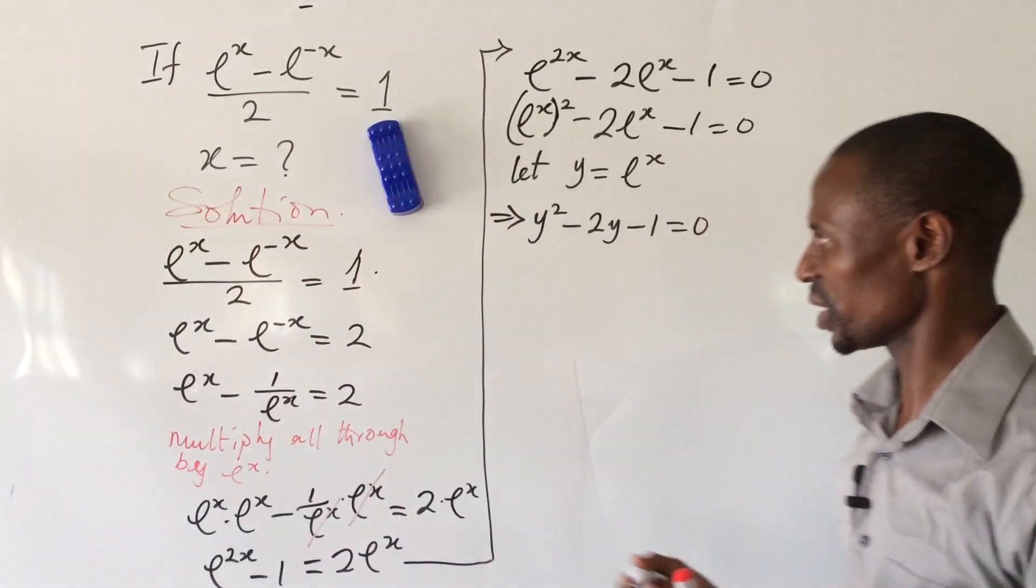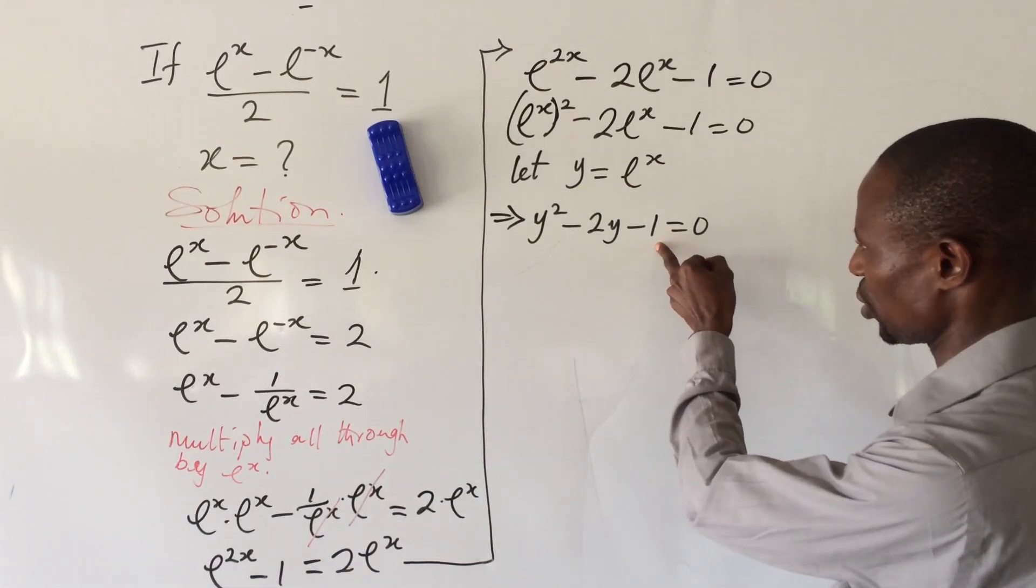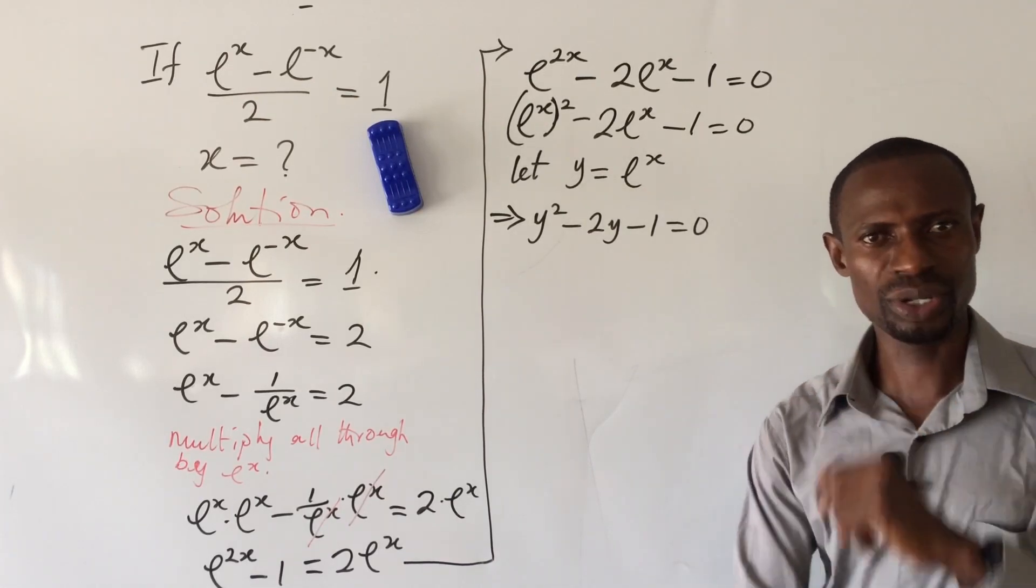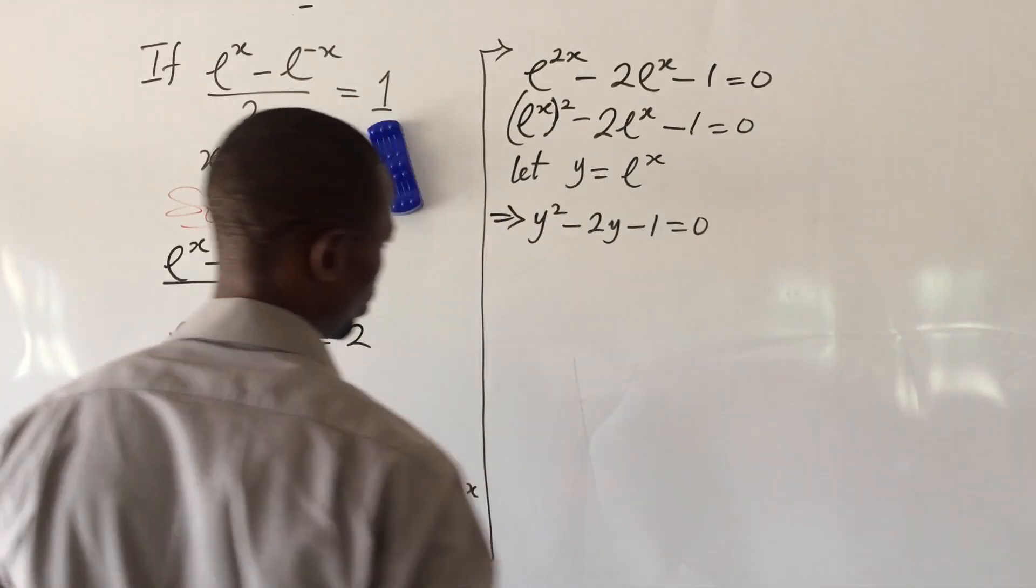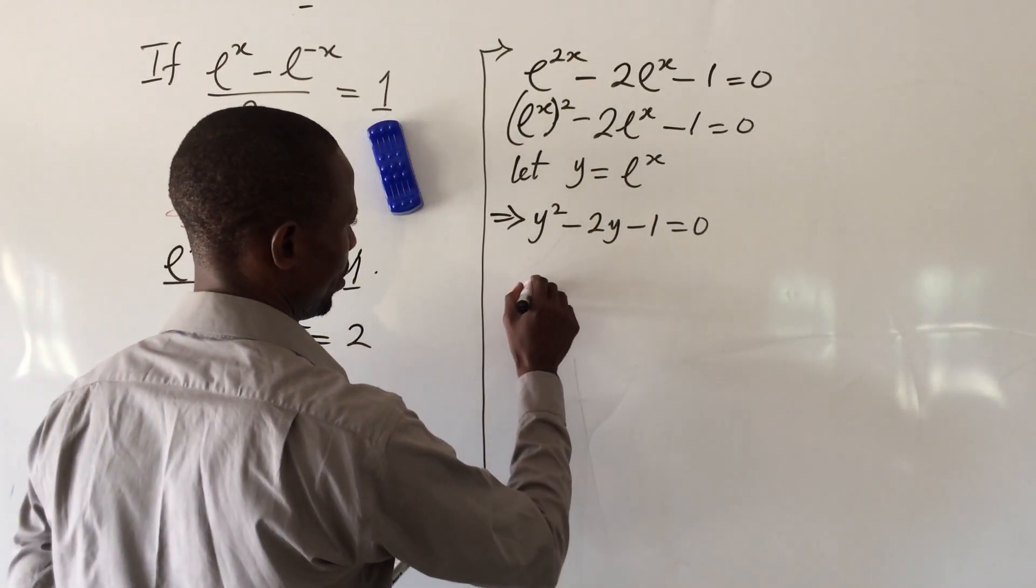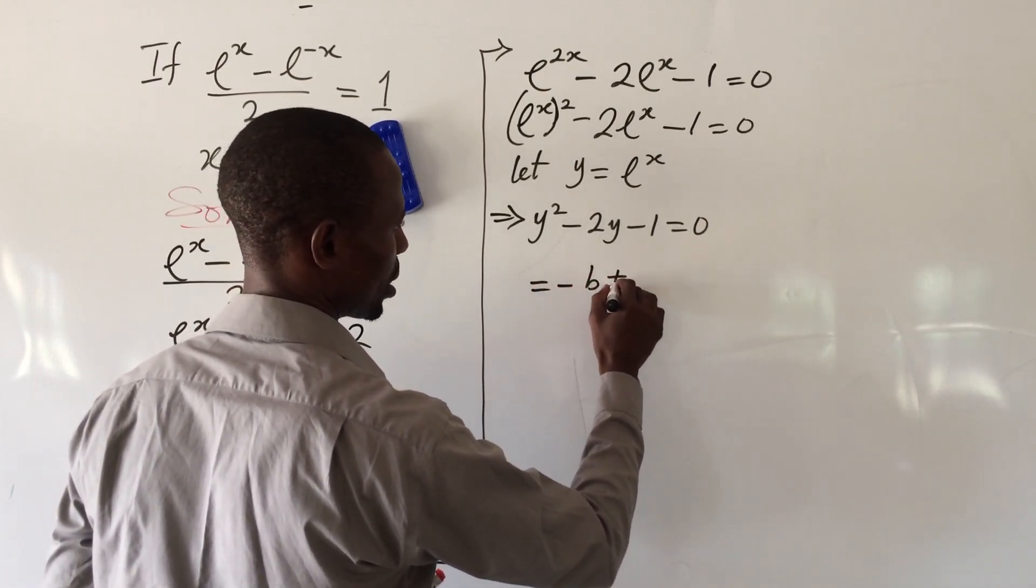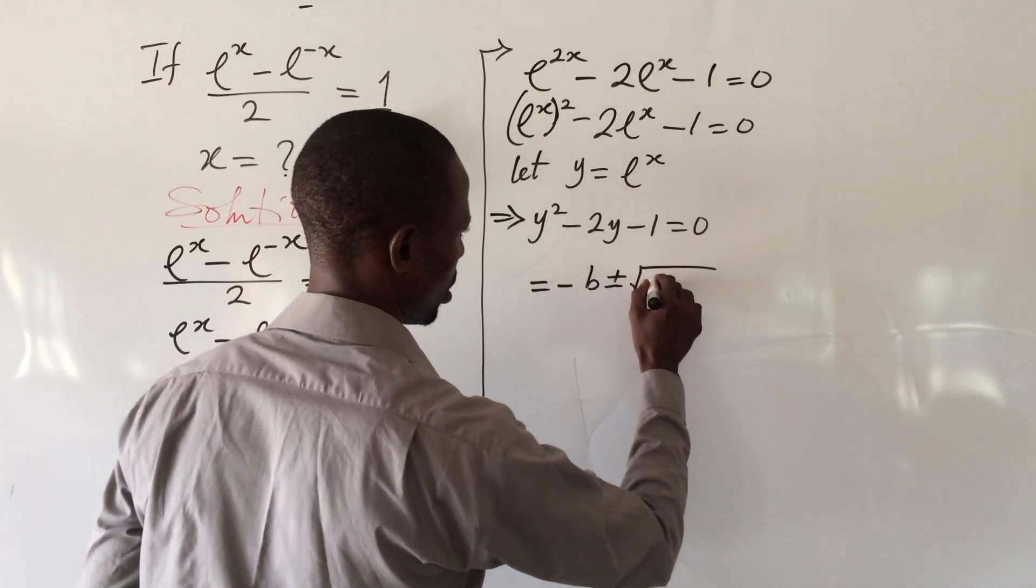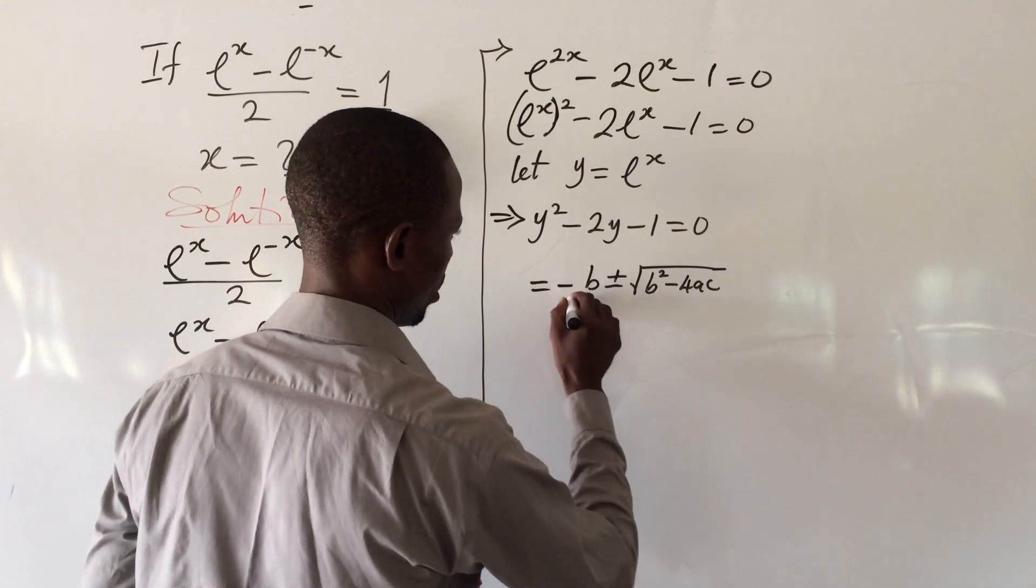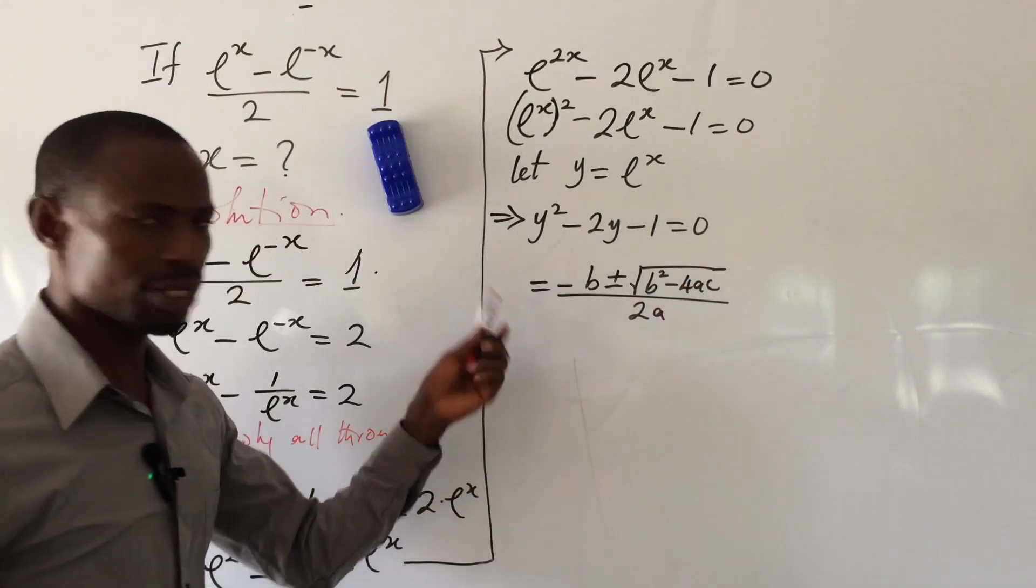Automatically, this is a quadratic equation. Now we have to solve this quadratically. Because of the nature of this constant, we cannot use the factorization method, so we use the formula method. The formula says y = (-b ± √(b^2 - 4ac)) / 2a.